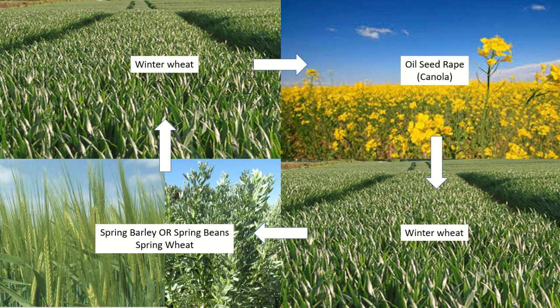However, it's a very high-risk crop and suffers from an insect pest called cabbage stem flea beetle, which is resistant to all insecticides. So assuming we survive and manage to grow a crop of canola, we will then go back to wheat again.